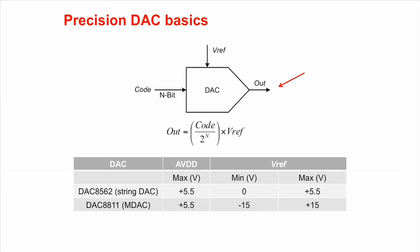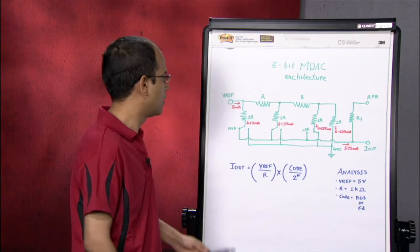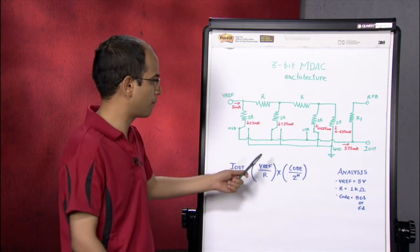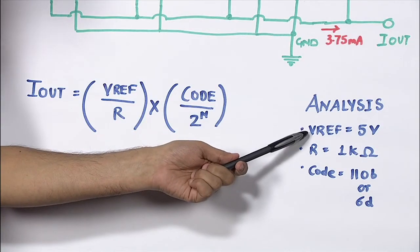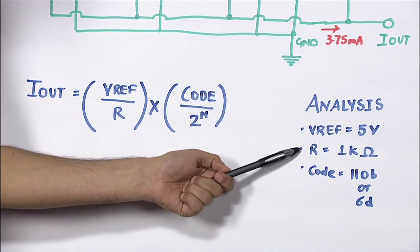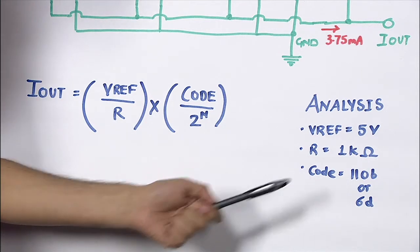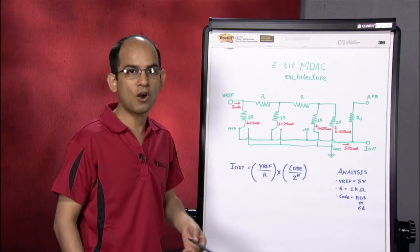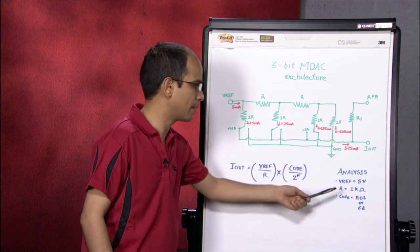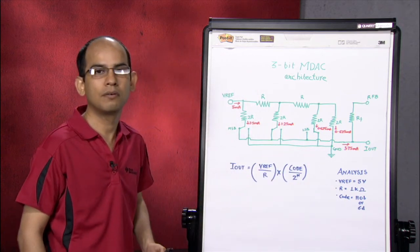For simplicity, I will walk you through an example of a 3-bit MDAC. Now, let's take an example of this MDAC with VREF equal to 5 volts, R equal to 1k, and code equal to 110. And let's calculate how much current would flow through the IOUT pin for this particular code.